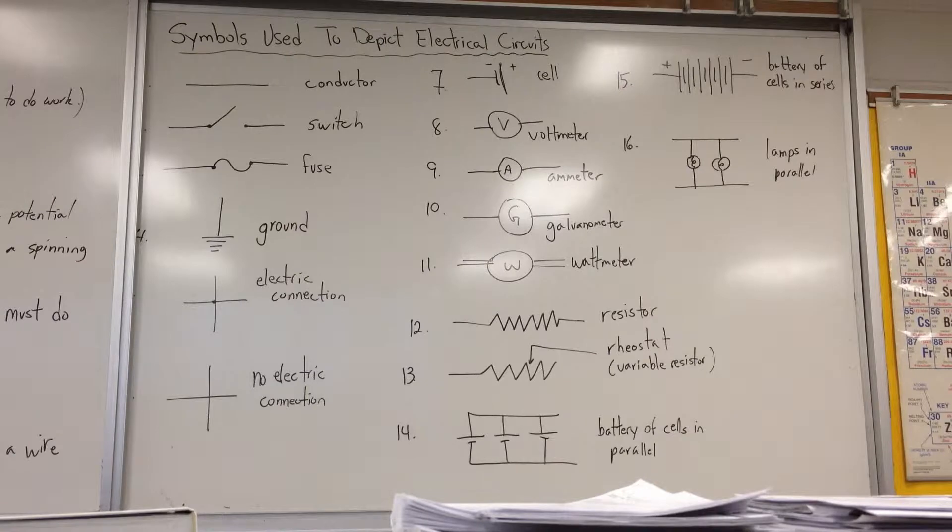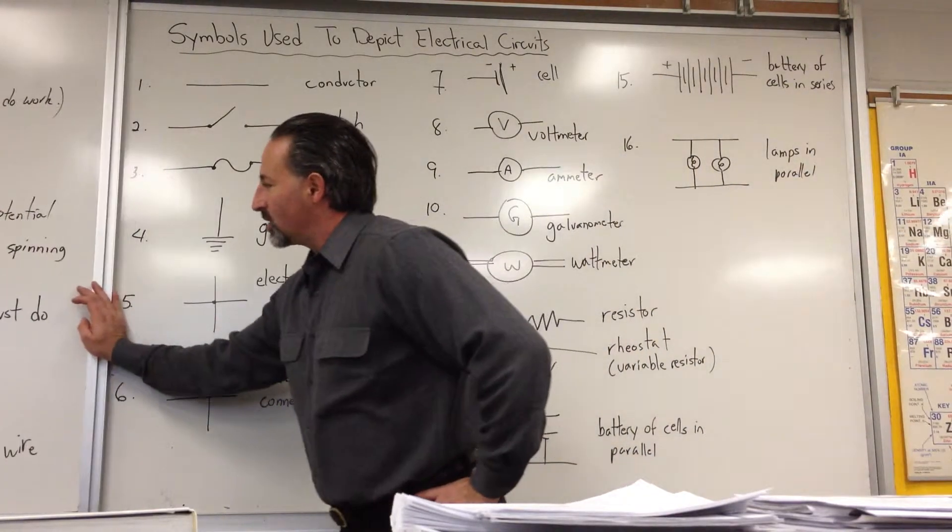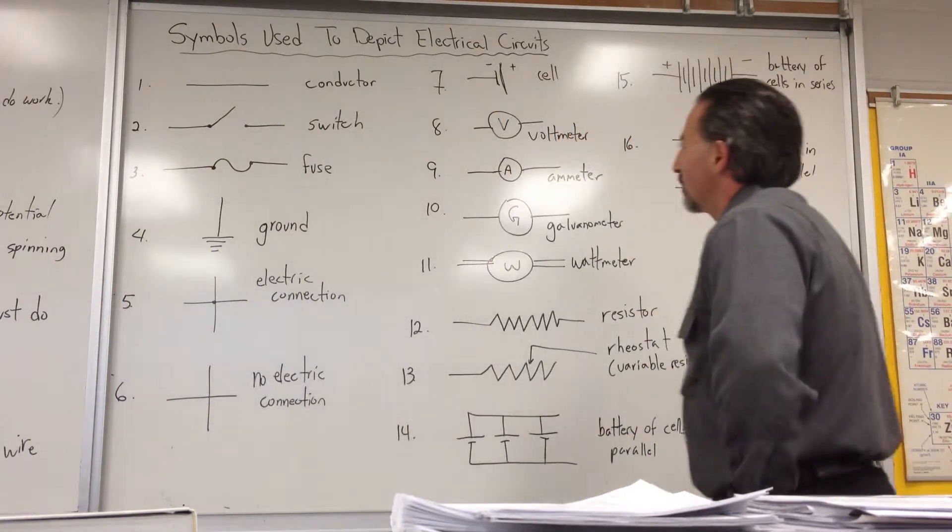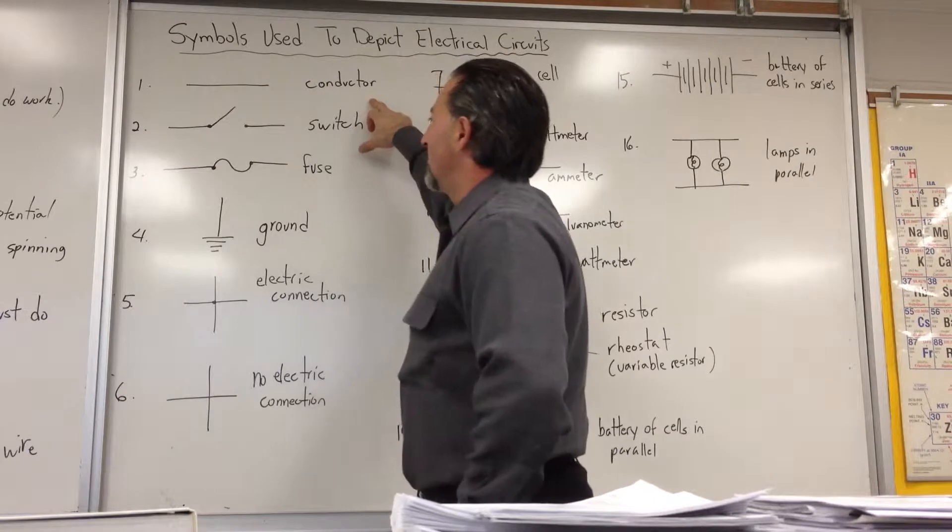When dealing with current electricity, there are several symbols that are used to depict the different types of circuit parts that you might come across. The simplest one would be a straight line representing a conductor.